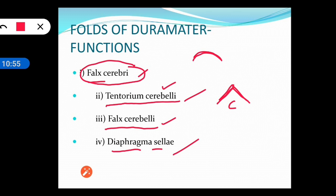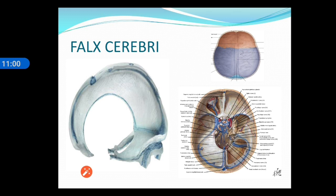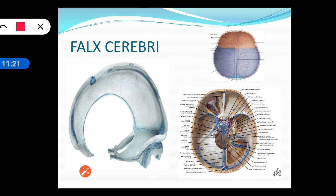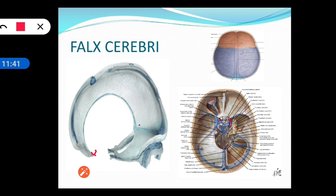We will now study the falx cerebri individually. Falx means sickle-shaped, and this fold is sickle-shaped, present in between the two cerebral hemispheres. It has a pointed anterior end, a broad posterior end, a convex upper margin, and a concave inner margin. The pointed anterior end is attached to the crista galli.